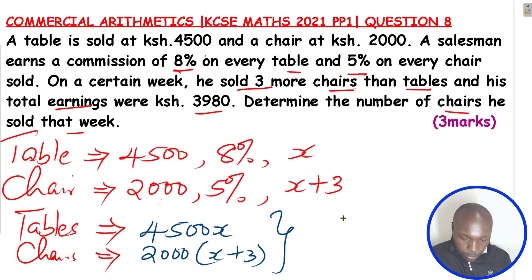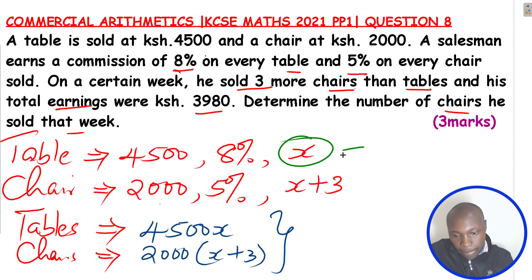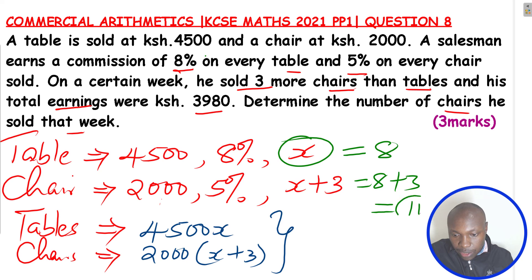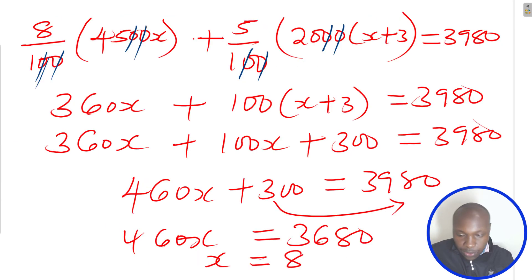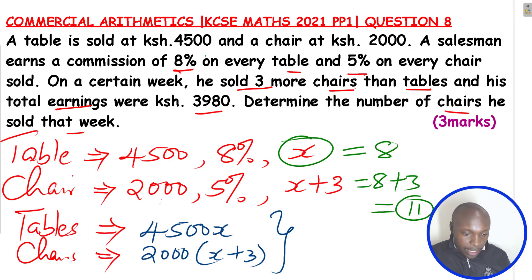Solving for x: 460x equals 3,980 minus 300, which is 3,680. So x equals 8. Remember, x was the number of tables. Since the question asks about the number of chairs, it will be x plus 3, which is 8 plus 3, giving 11. So the chairs are 11 in number, and that is the required answer.